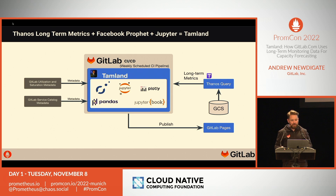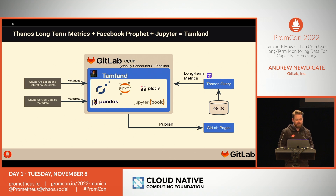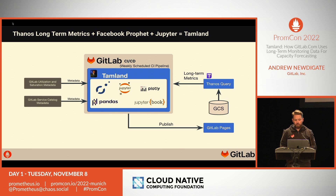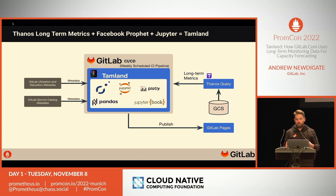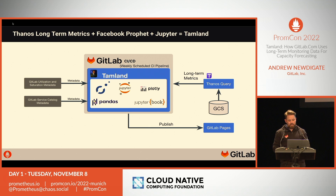We jokingly called the proof of concept Tamland, after Brick Tamland — the kind but simple-minded weatherman from the Anchorman movies played by Steve Carell. It started off as a proof of concept but the name has stuck. We selected the Python version of the Prophet library because we have more expertise in Python than in R. Prophet is well-suited for use with Jupyter Notebooks, but we wanted to automate the process of generating these reports, so we used a Python library called Jupyter Book, which is designed to generate static websites from Jupyter Notebooks or Markdown documents. In a GitLab CI pipeline, we import the utilization data from Thanos, run the forecast, and generate a static site, publishing it for internal use using GitLab Pages — currently on a weekly basis, though we're considering switching to daily.